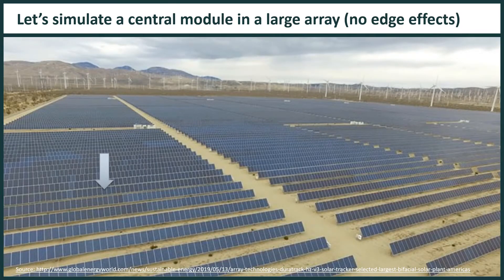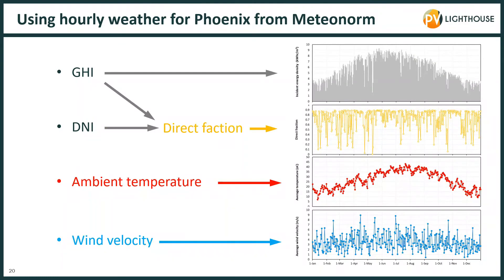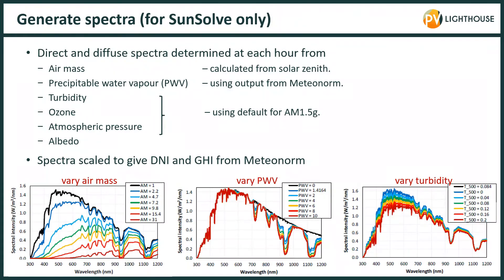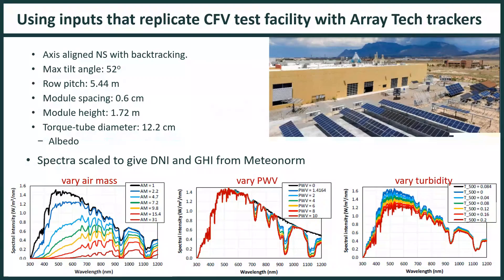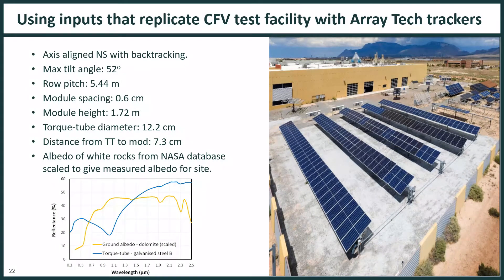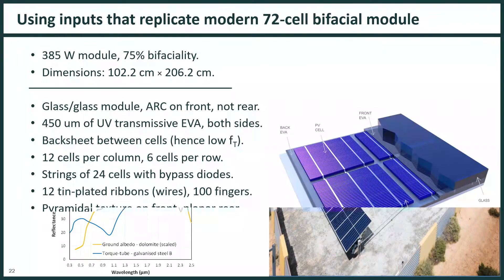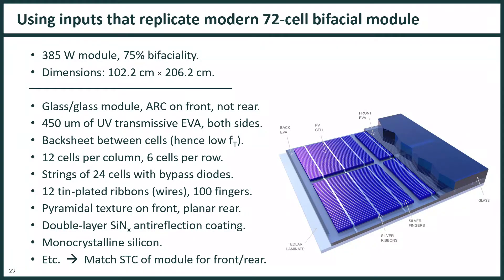Let's get back to simulating a central module in a large PV array. We take the weather for Phoenix from MeteoNorm and feed it into both programs. We generate spectra for both direct and diffuse light for each hour of the day and feed those into SunSolve. We set the system inputs such as row pitch and module spacing to the same values used previously in our collaboration with CFE and Array Technologies. The albedo is wavelength dependent, as is the reflectance of the galvanized torque tubes. The module inputs were chosen to replicate a modern 72-cell bifacial module. For PVSYST we need mainly the dimensions and bifaciality plus the equivalent circuit inputs, which are the same for both programs.